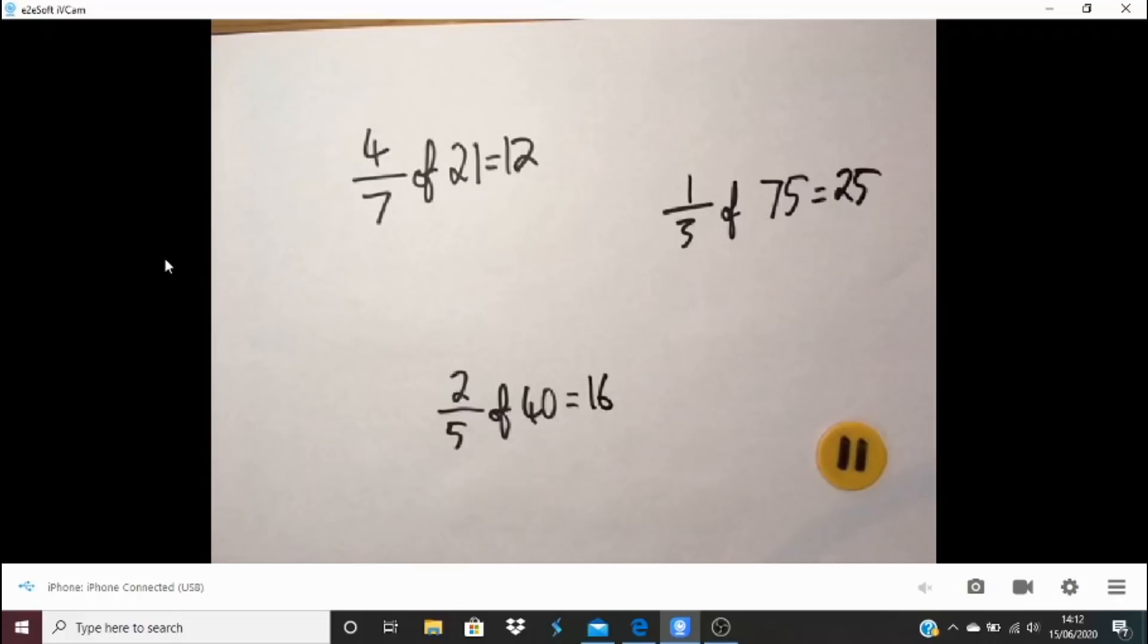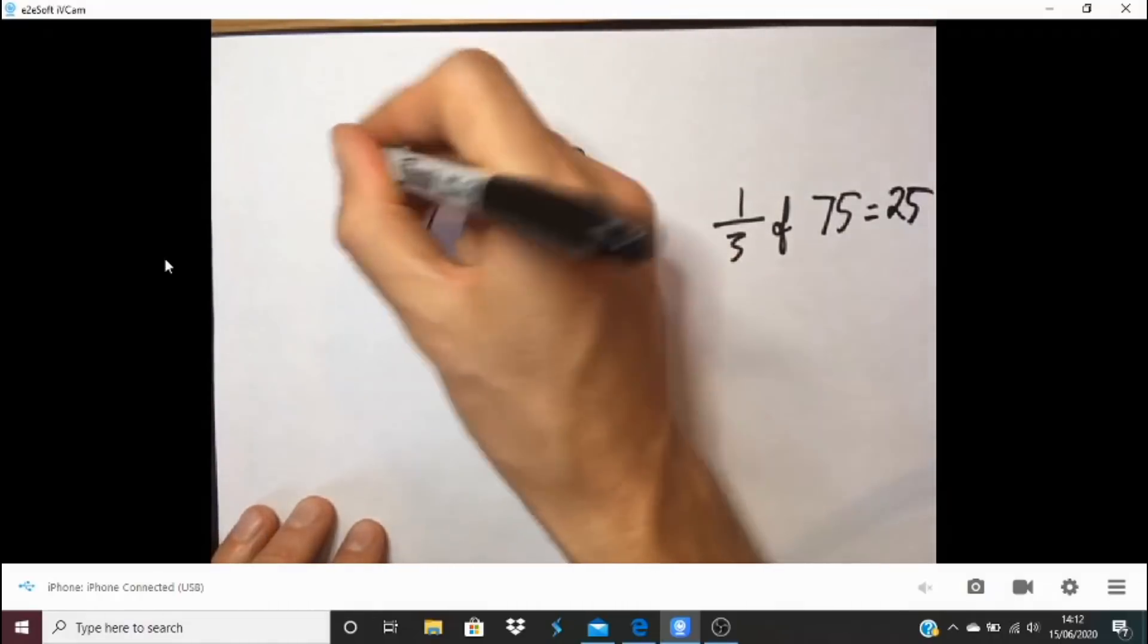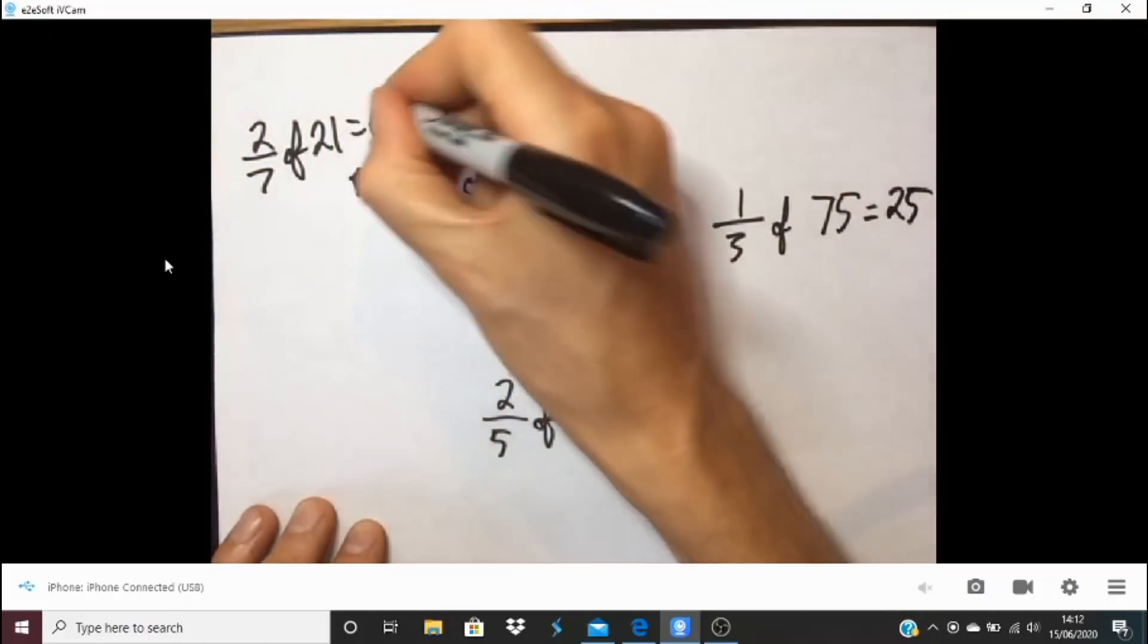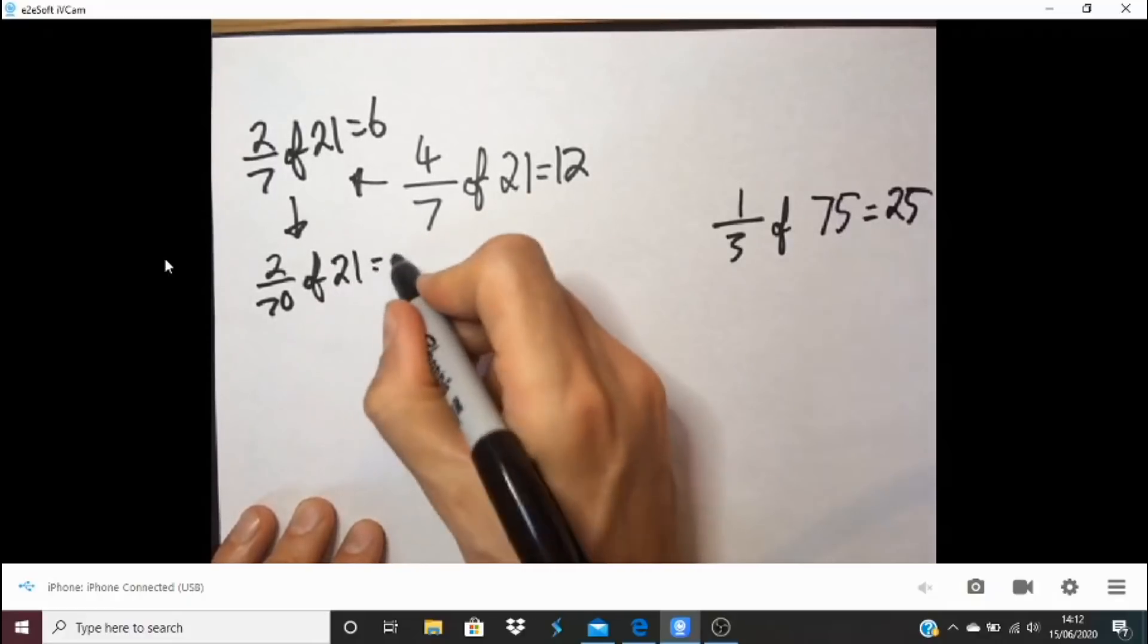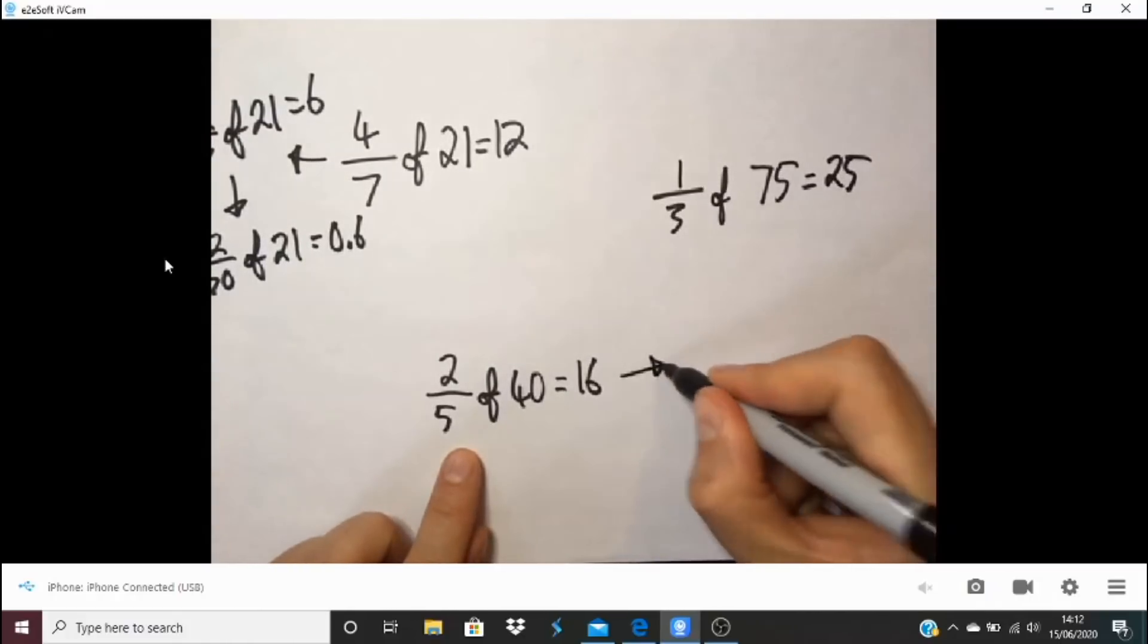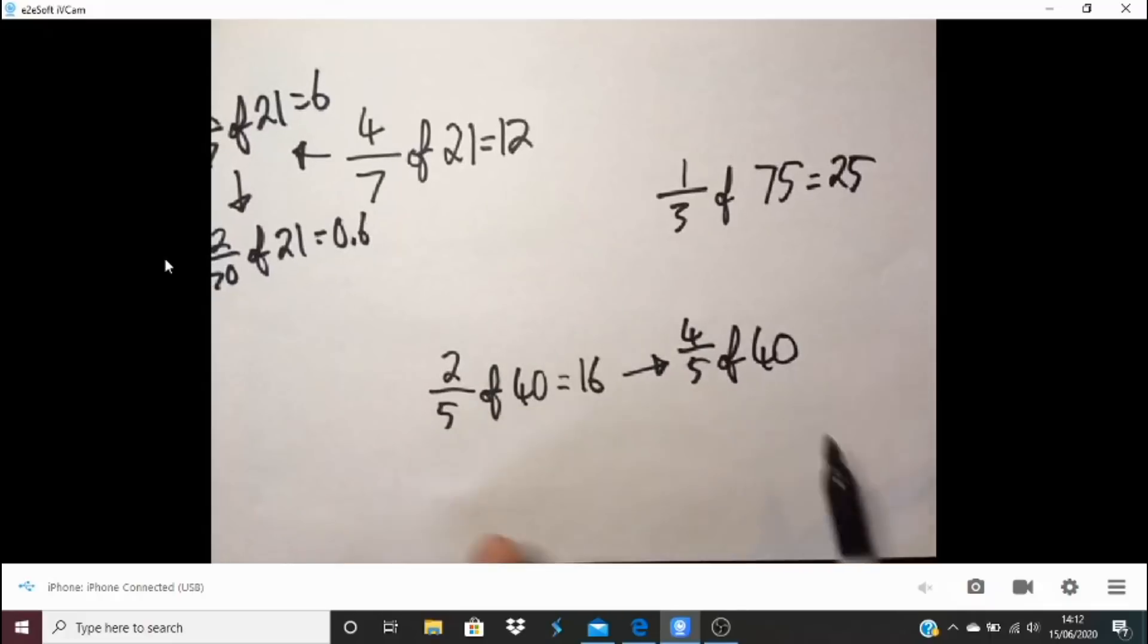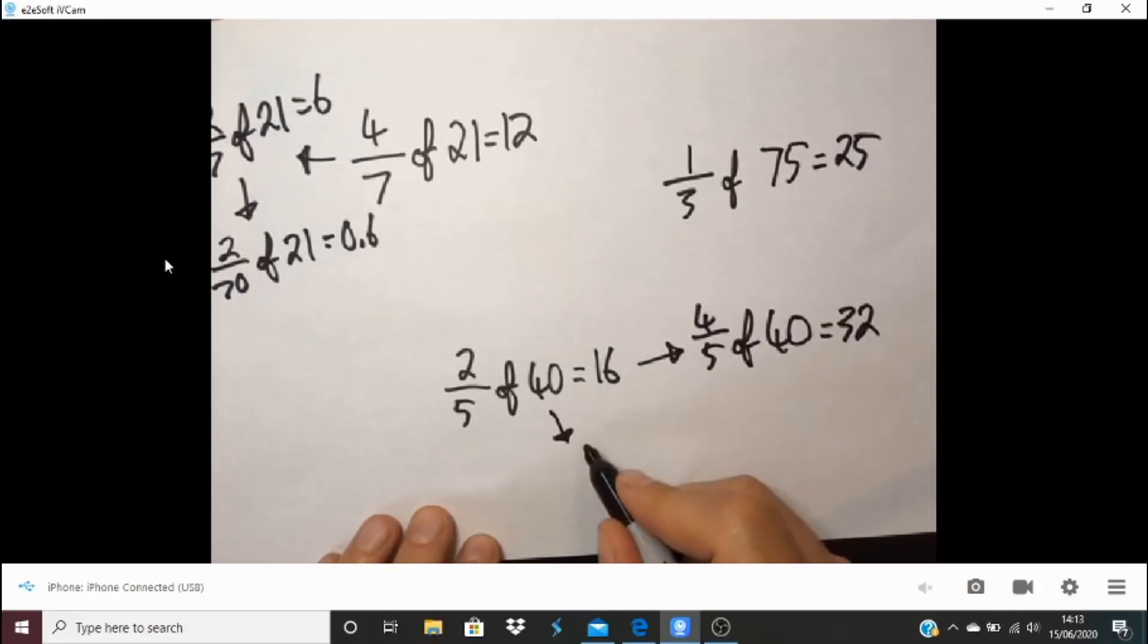Let's see if we can come up with a few different related facts for either of those examples. So four-sevenths of 21 equals 12. What will two-sevenths be? Two-sevenths of 21, well, that is going to be half. It's going to be six. And let's go from that one. How about we go for two-sevenths of 2.1, and that's going to be 0.6. Let's go from two-fifths of 40 equals 16. So maybe we could go there for four-fifths of 40. You notice that what's happened, the numerator has doubled, so rather than 16, it's going to be 32 there.